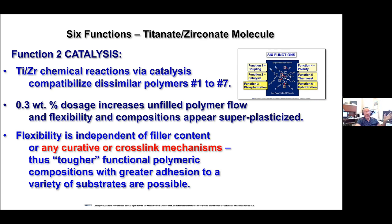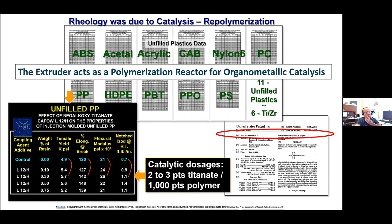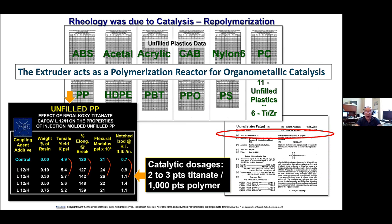The flexibility is independent of filler content and any curative or cross-link mechanism — thus tougher functional polymeric compositions with greater adhesion to a variety of substrates are possible. There were over 5,000 patents by other investigators based on these basic concepts. We filed a patent called 'repollinization' and stood before a tribunal of three judges in Zurich for three days defending it. We demonstrated that we took 11 thermoplastics with six different titanates and six different zirconates at several different loadings, increased the flow, tensile, elongation, and impact strength in low dosages, and finally got the patent issued in Europe.